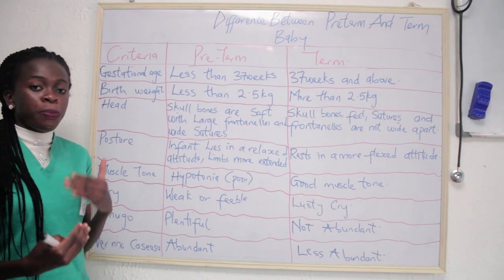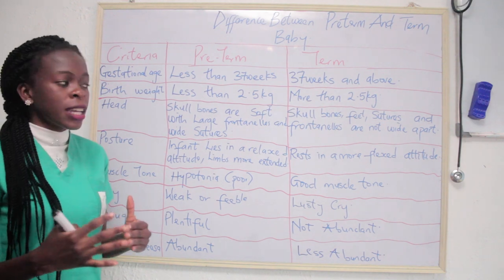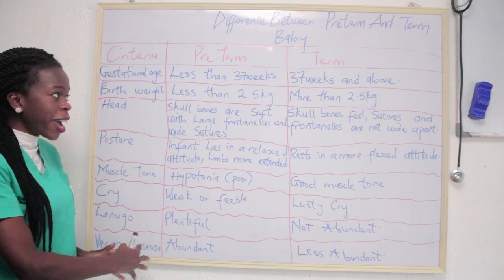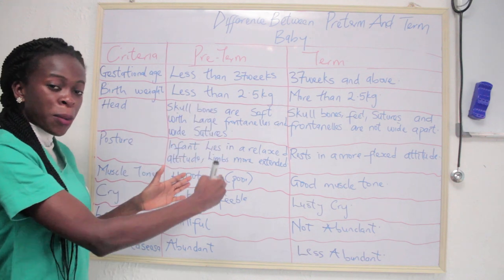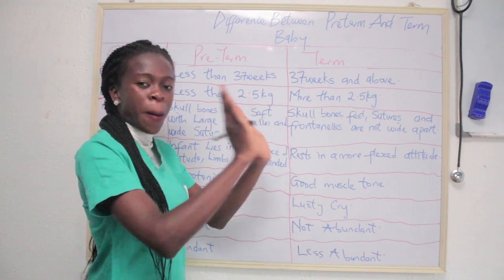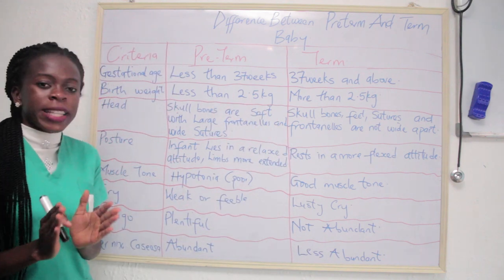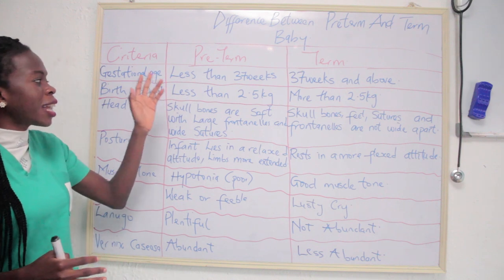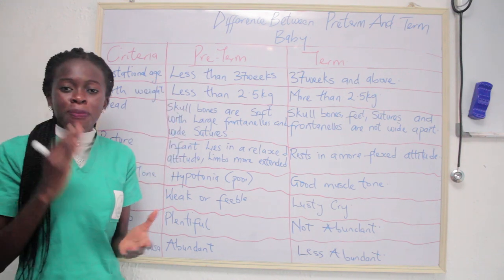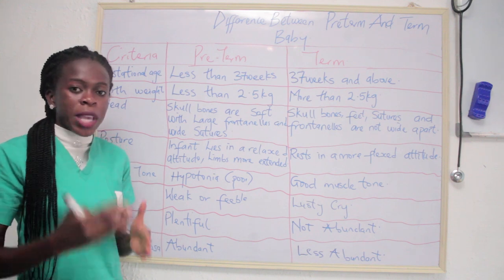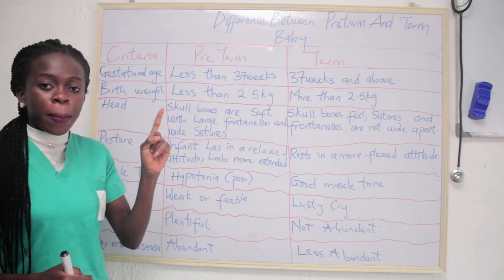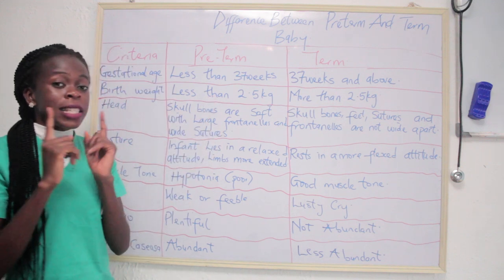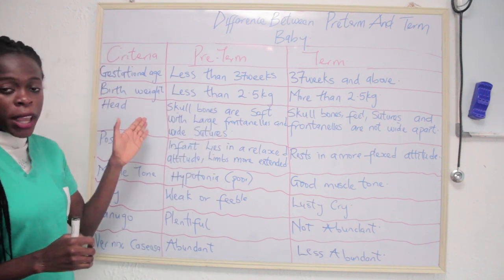Here are the tips on the differences between pre-term and term babies. I actually tabulated them — the first part is the criteria, the other part is for pre-term babies, and the last part is for term babies. The first criteria is gestational age: for pre-term babies it is less than 37 weeks, while for term babies it is 37 weeks and above. The second criteria is birth weight.